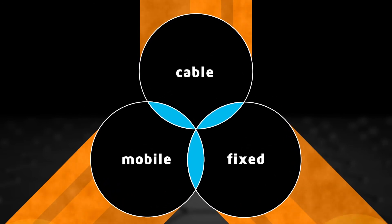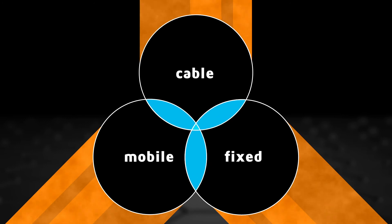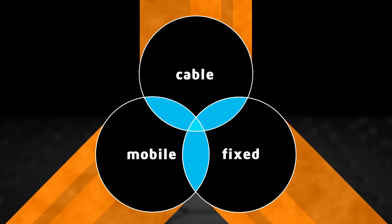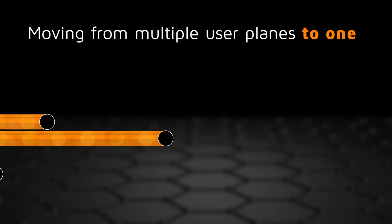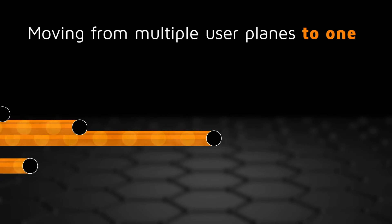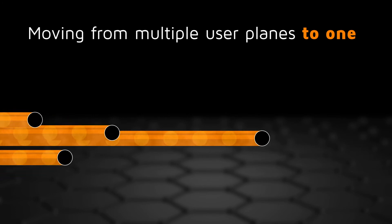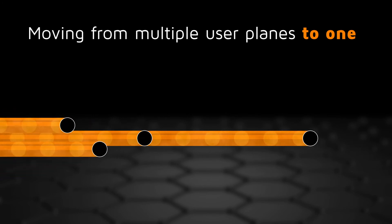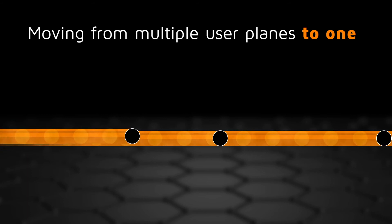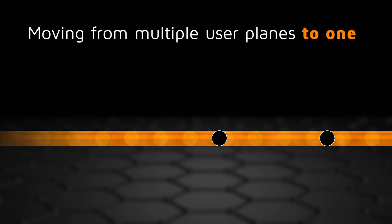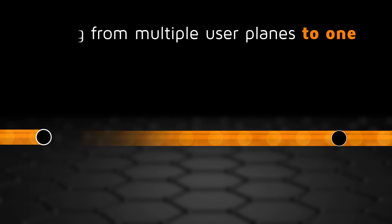It doesn't make sense to run each with a separate silo or equipment. The convergence supported by the Axiom platform allows packets to shift from traveling among many different cores to relying on one common virtual cloud.